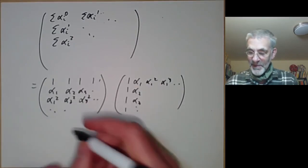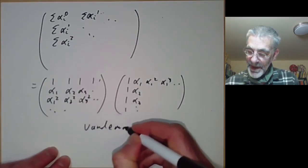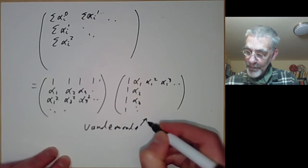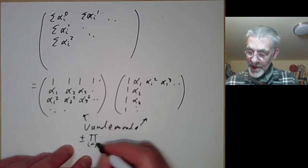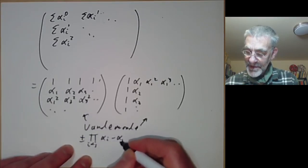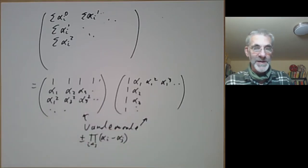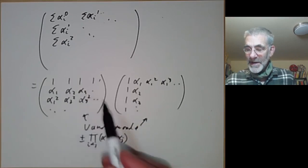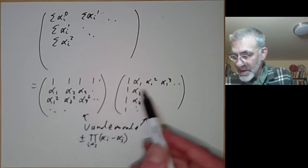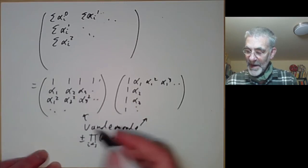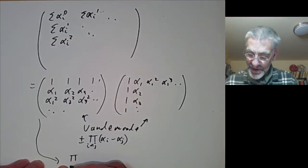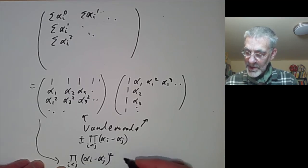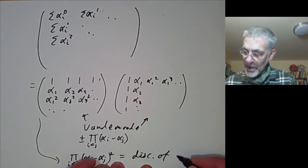Now you recognise these matrices — they are just the Vandermonde matrices. Their determinants are ± the product over i < j of (α_i − α_j). There's some sign in the Vandermonde determinant, but it doesn't really matter because we're squaring the Vandermonde matrix. So the whole expression becomes the product over i < j of (α_i − α_j)², which is the discriminant of the polynomial.